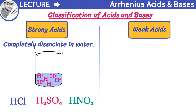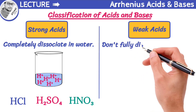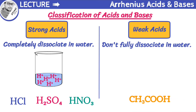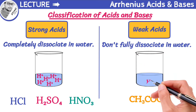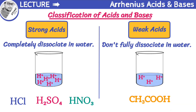Weak acids are a bit different from strong acids. They don't fully dissociate in water, meaning they only release a small fraction of their hydrogen ions. For example, when acetic acid dissolves in water, only a small percentage of it breaks apart into hydrogen ions. That's why acetic acid is known as a weak acid.